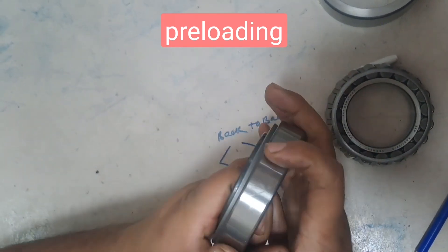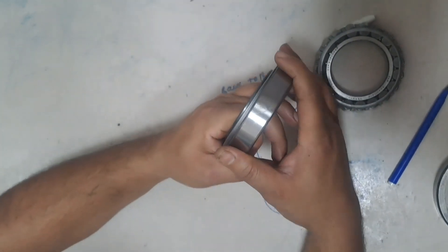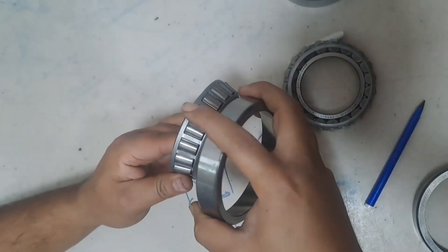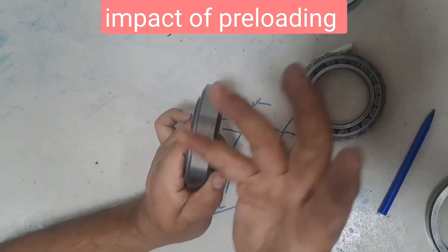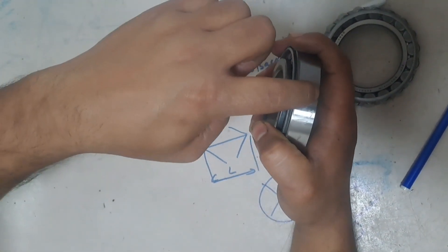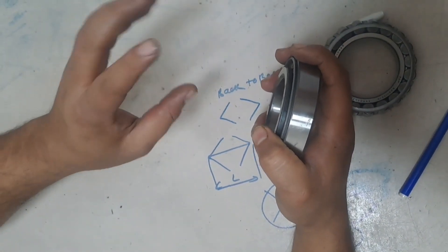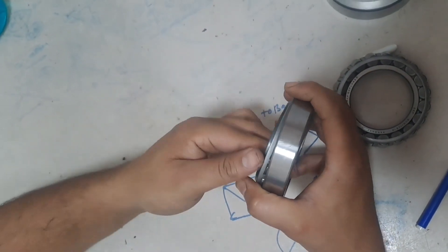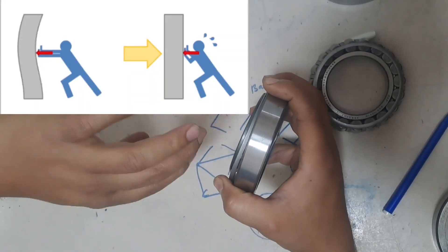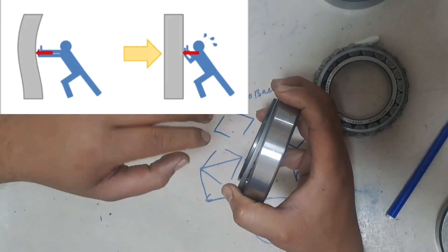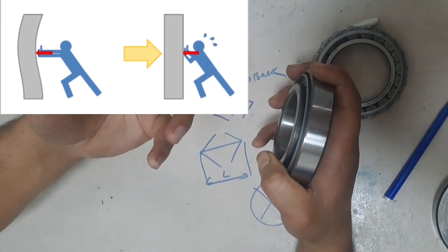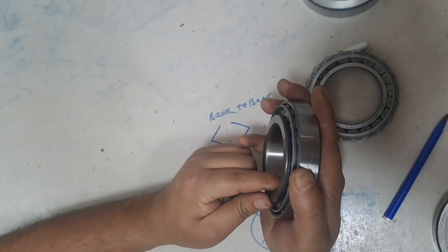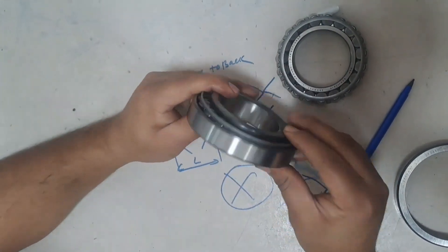Now we will understand how to preload the bearing. Preloading is done with the help of an outer cap or a lock nut. In back-to-back arrangement, preloading is applied with a lock nut, while in face-to-face arrangement it is applied through the outer cap. Preloading is necessary because cutting loads cause deflection; preloading provides a reaction force to counteract the cutting force, maintaining the accuracy of the spindle or ball screw.